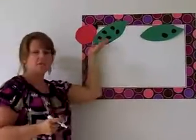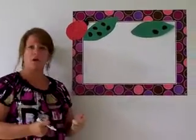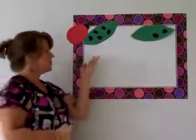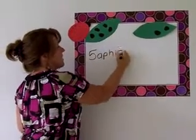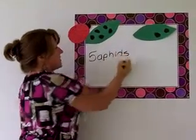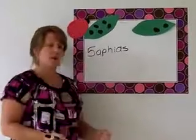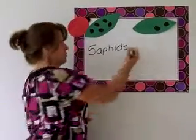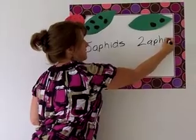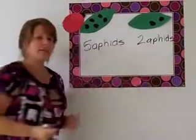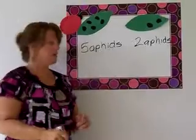I have a ladybug here and she comes across her leaf with five aphids on it. She's very hungry so she eats all five aphids. Then she comes across another leaf and it has two aphids on it. She's still very hungry so she eats two more aphids. I want to know how many aphids did the Grouchy Ladybug eat in all.